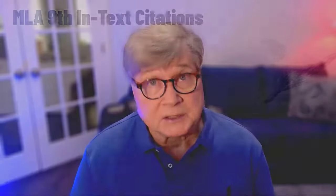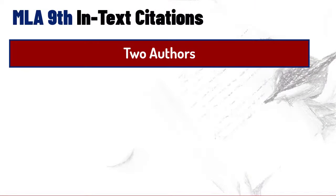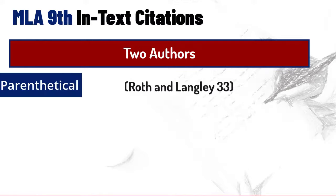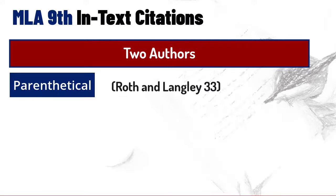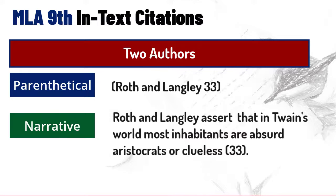Now that you've got those basics down, all we need to do is add a few variations that you will encounter. First variation: two authors. In the parenthetical citation, both authors are listed with an 'and' between them. In a narrative citation, same thing — both authors are listed and they're joined by 'and'.